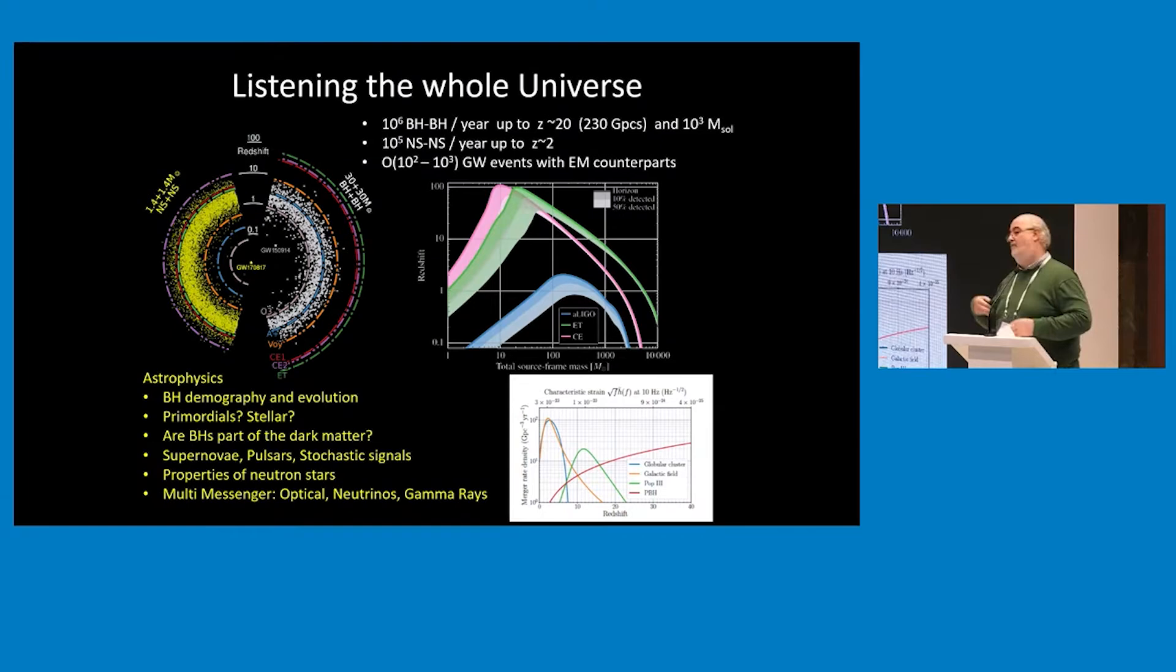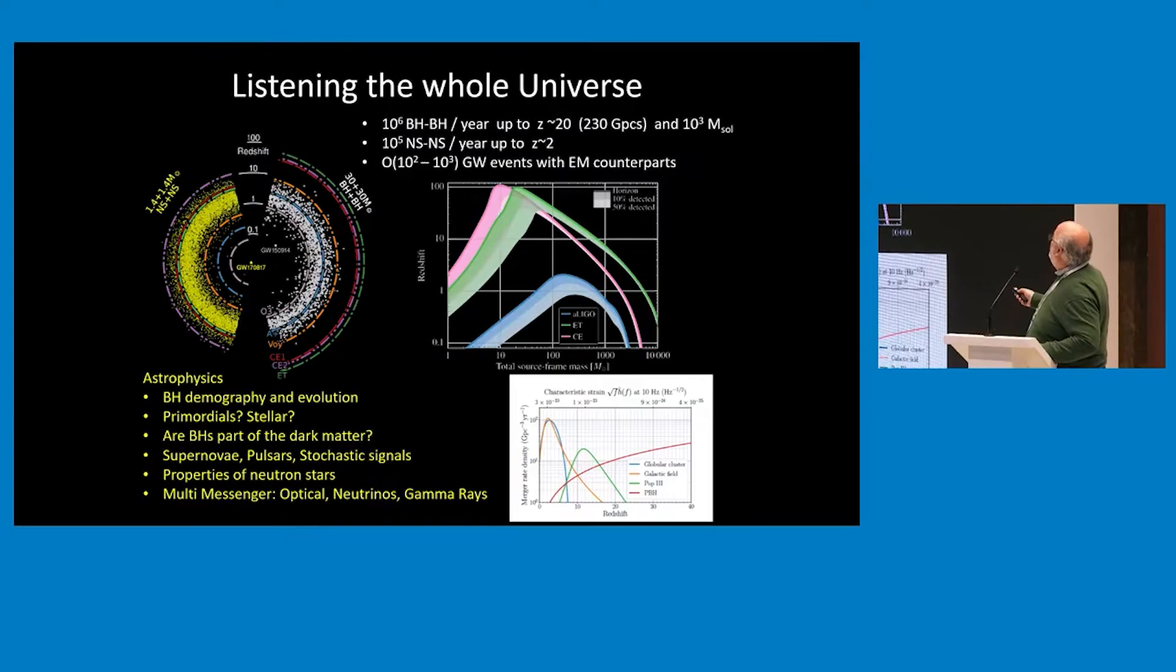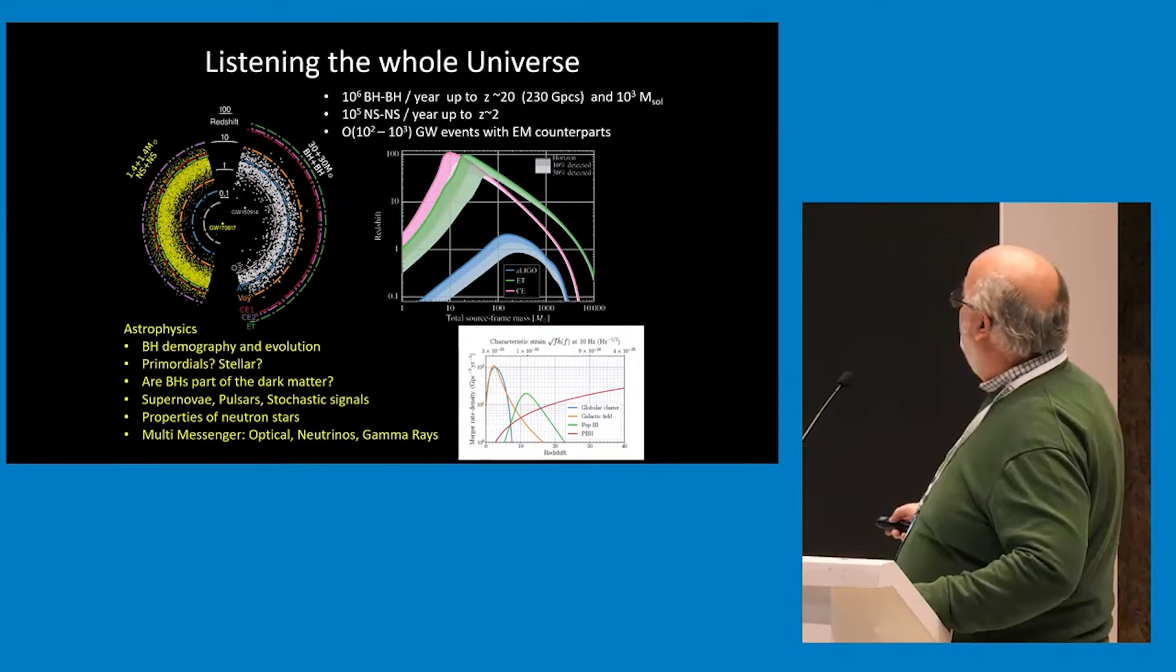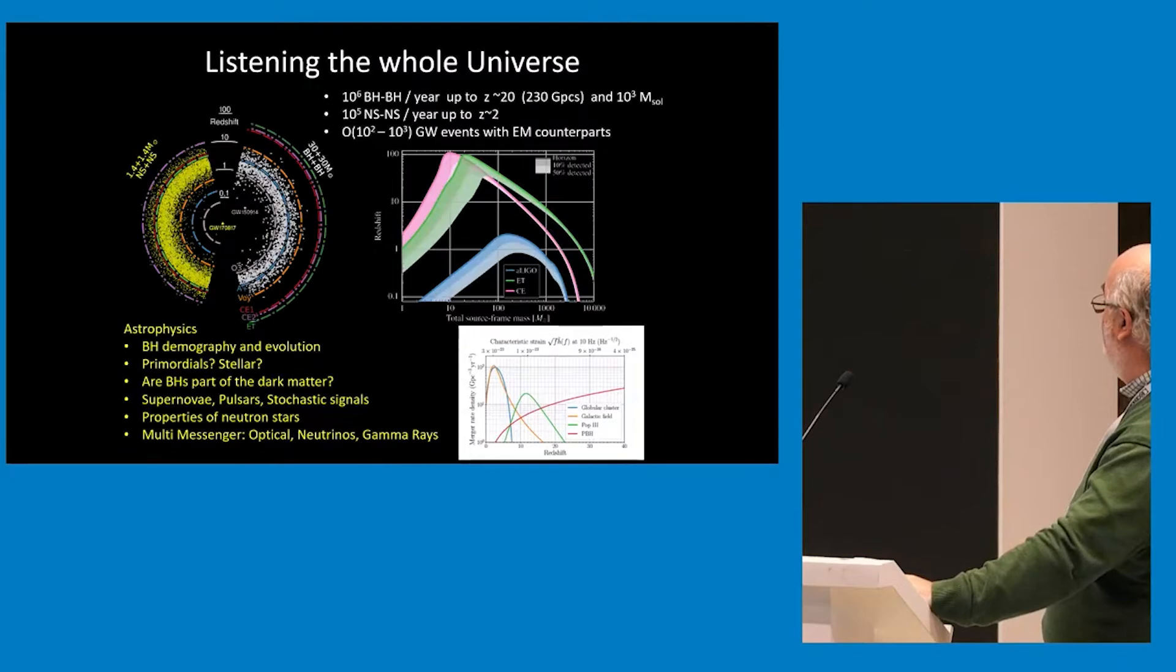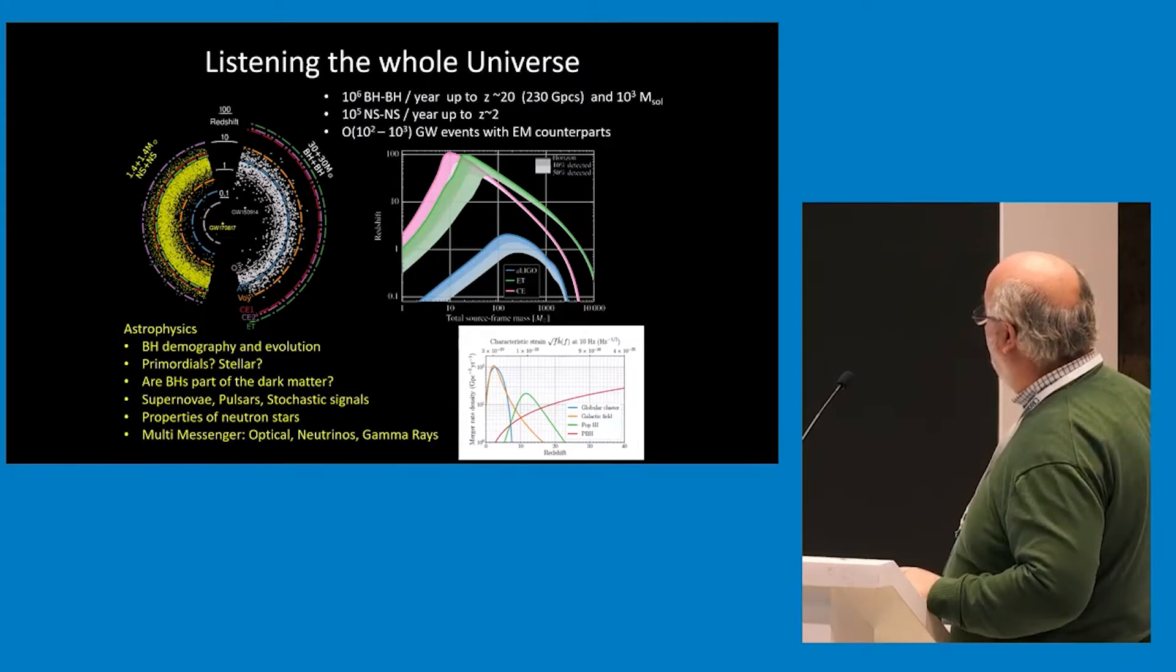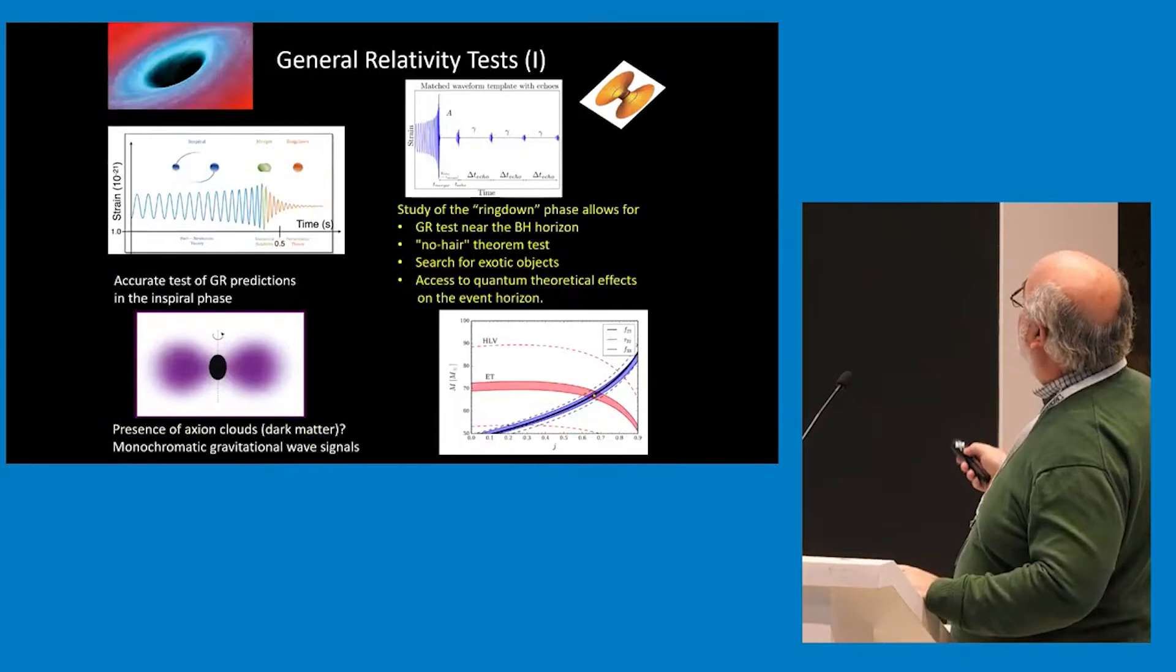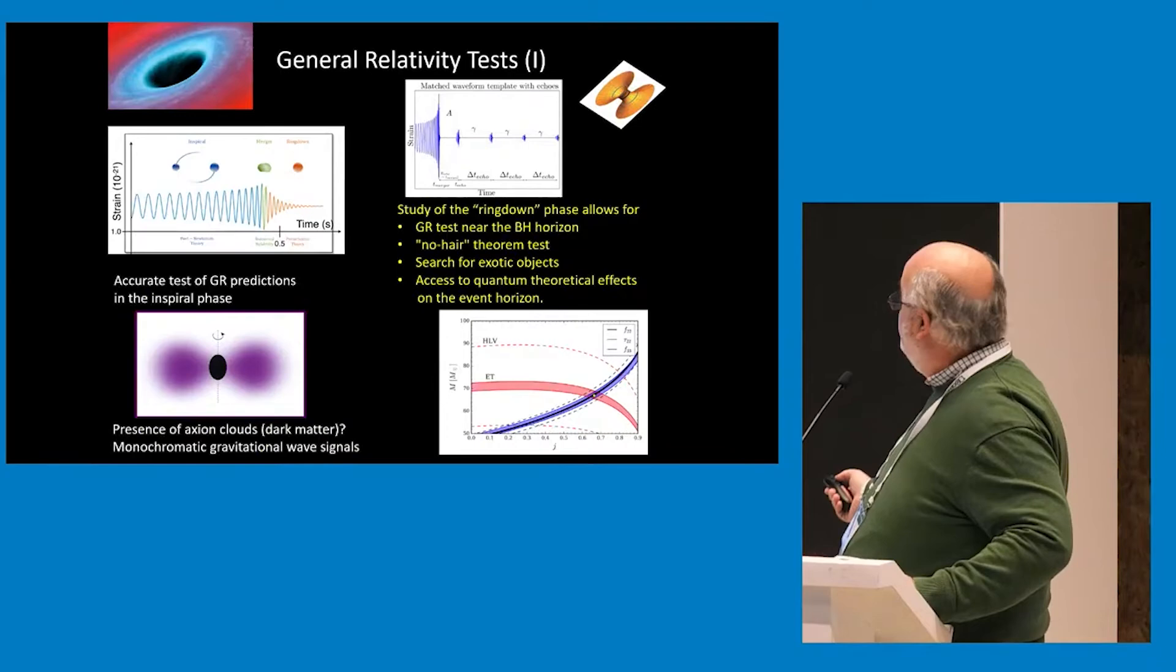I will rush, but I want to give you the numbers. Right now we are having three events per week. We will have 10 to the 6th per year, 10 to the 5th neutron stars, and order 10 to the 2, 10 to the 3 events with counterparts. With this, you can do all the physics you can imagine, but most importantly you can look at this merger rate to very high redshift. If there are primordial black holes, then you will start seeing that it keeps growing with volume. You can do tests of general relativity in many ways, and also even look for axion clouds surrounding black holes, which are dark matter candidates.